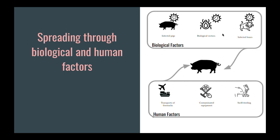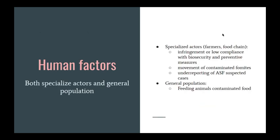Focusing on the human factor, both specialized actors like farmers and the food chain play a role, in particular with infringement or low compliance with biosecurity and preventive measures, movement of contaminated fomites, or underreporting of African swine fever suspected cases. The general population can also play a role by, for example, feeding animals with contaminated food.